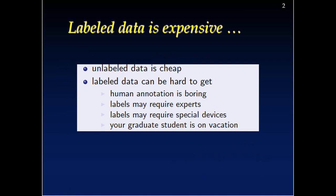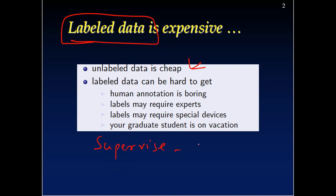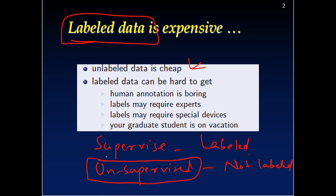Why are we interested in semi-supervised learning? Well, labeled data is very expensive to get in many instances, while unlabeled data is quite cheap. Supervised learning is used when your data is labeled, and unsupervised learning is used when it is not labeled — there is no target variable for unsupervised learning, but there is a target variable for supervised learning.